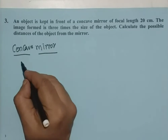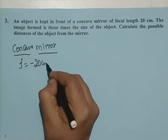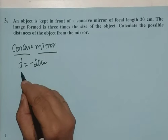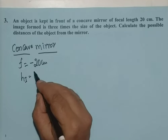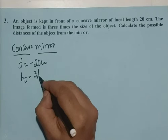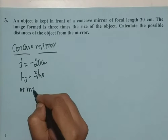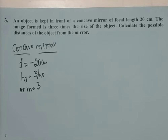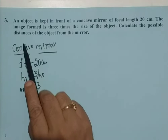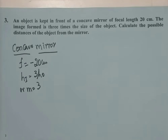The image is three times the size of the object, meaning HI equals 3 times HO, or M equals 3. The word 'possible distances' is used because a concave mirror can produce both real as well as virtual images. Therefore, in this type of problem, we need to solve for two cases: one for real image, and another for virtual image.